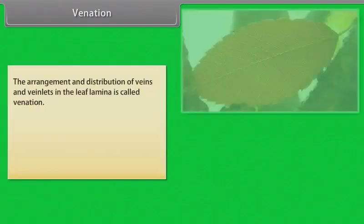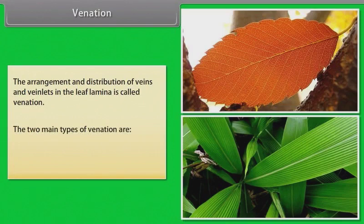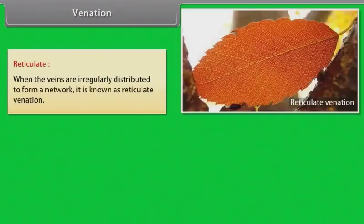Venation. The arrangement and distribution of veins and veinlets in the leaf lamina is called venation. The two main types of venation are reticulate and parallel. Reticulate: when the veins are irregularly distributed to form a network, it is known as reticulate venation.